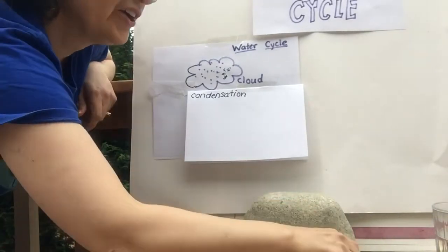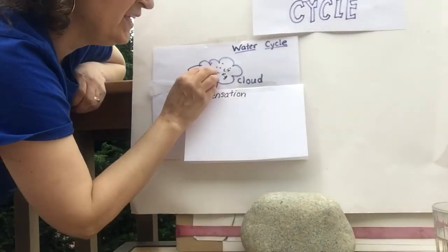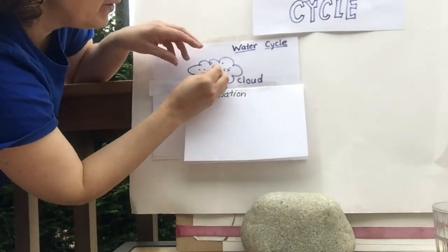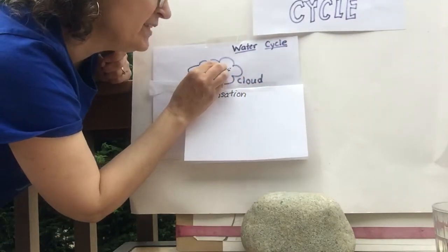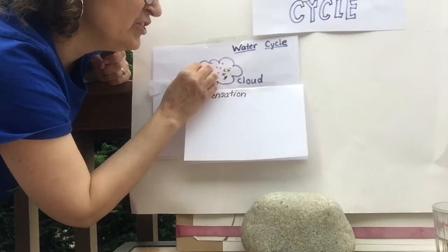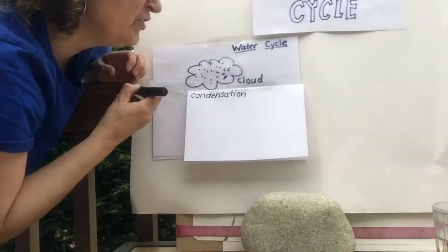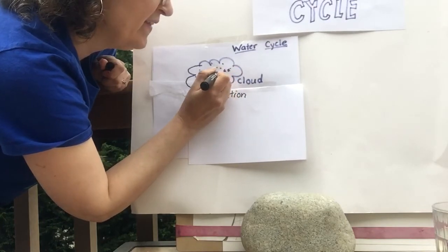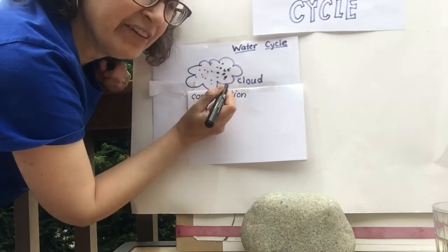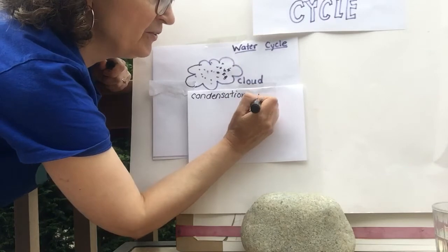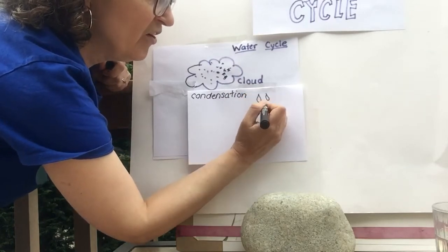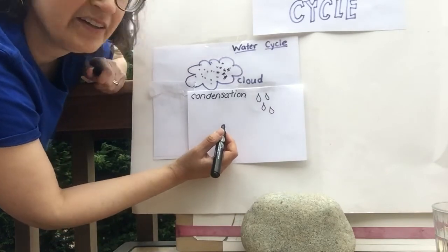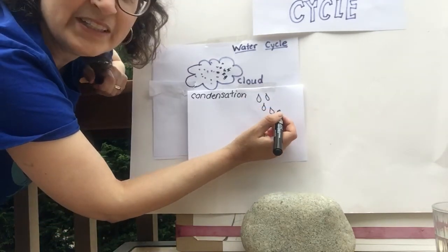A cloud occurs when teeny tiny water that's in the air — the little tiny water droplets — start to bump into each other. As they do, they start making bigger particles and they get heavier and heavier. Soon they fall, and as they fall out of the cloud, we see rain.